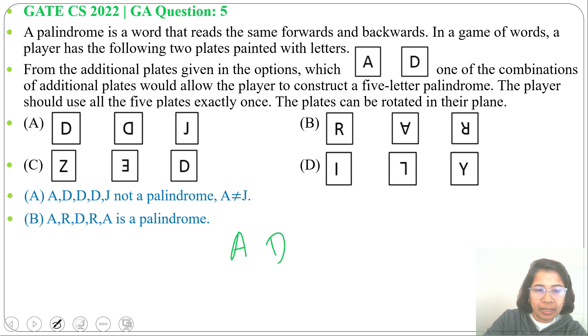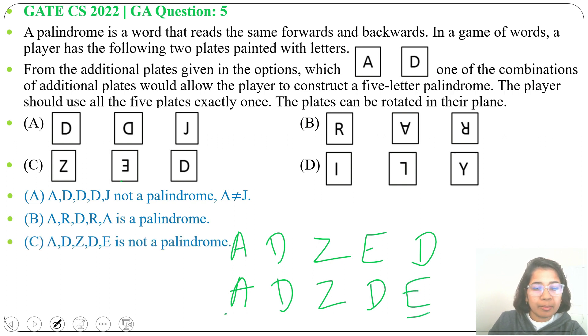Next option C: A, D, then Z. After rotation we will get E, D. Suppose we will switch A, D, Z, D, E. A not equals to A. So this is not a palindrome.